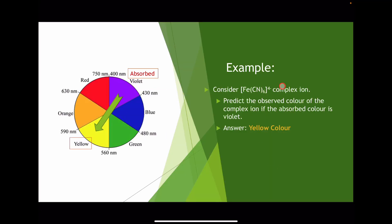Example question: consider the hexacyanoferrate(2-) complex ion. Predict the observed color of the complex ion. If the complex absorbs violet light, then looking at the color wheel, the observed color is yellow — the complementary color of violet.